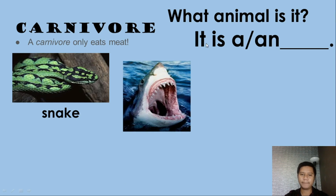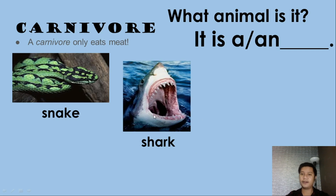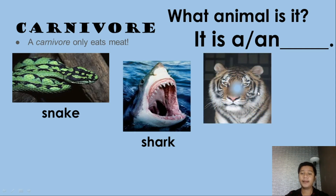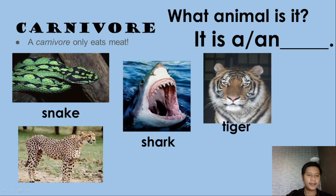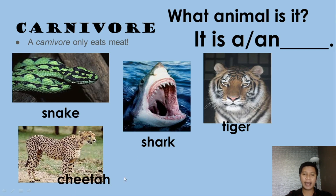What animal is it? It is a shark. A shark is a carnivore because a shark eats small fish or other animals. What animal is it? It is a tiger — a tiger is a carnivore. What animal is it? It is a cheetah — a cheetah is also a carnivore.